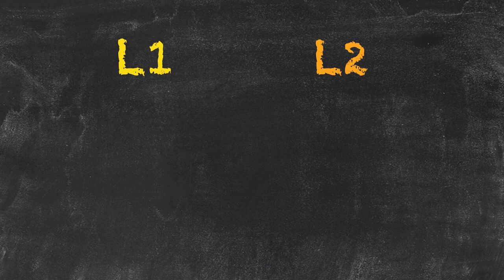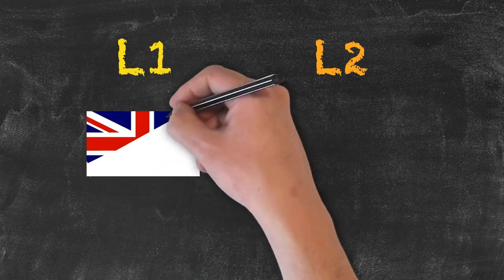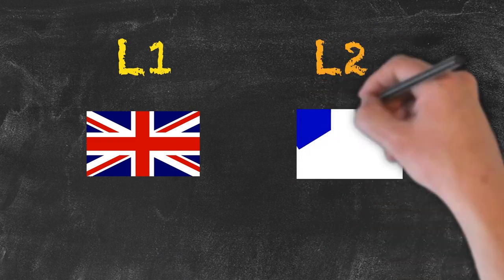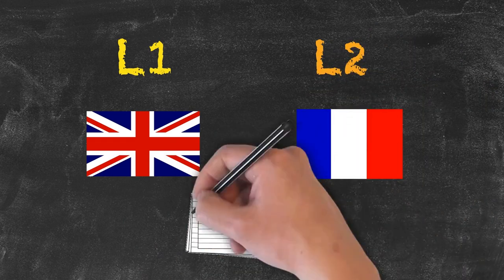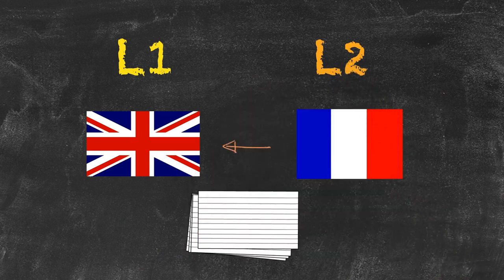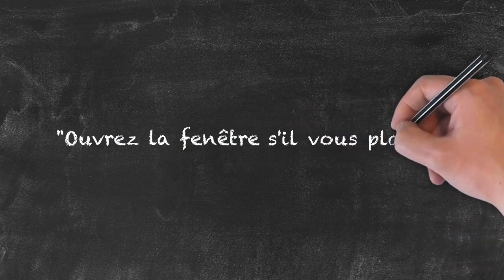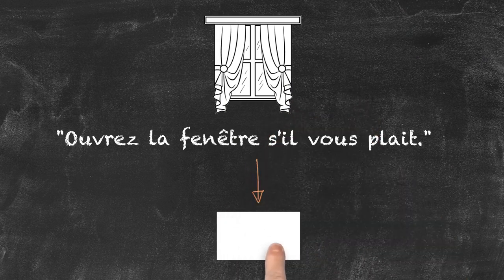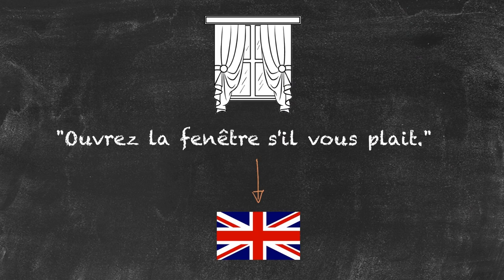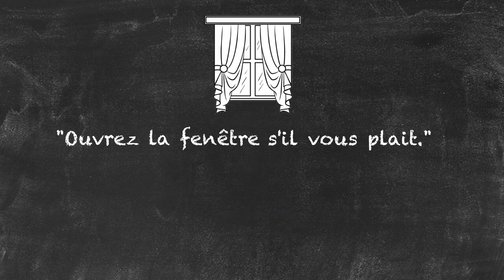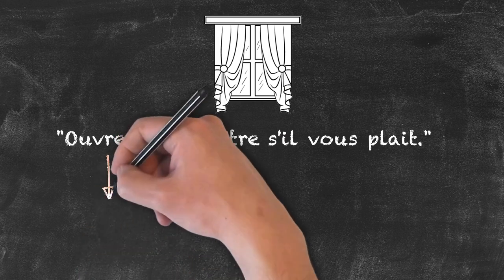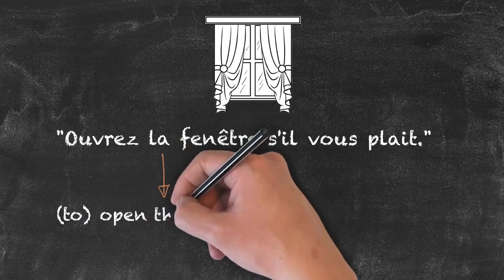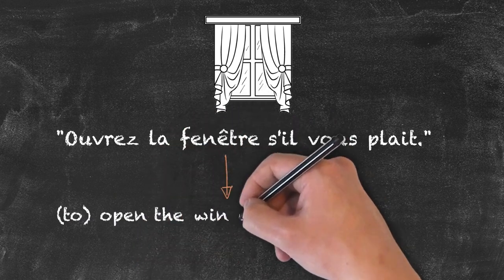Let's take a simple example. Imagine our native language is English and our target language is French, and we want to translate a French document into English. Here's a sentence in French: 'Ouvre la fenêtre, s'il vous plaît.' We want to take this L2 and translate it back into English. If we have a reasonable knowledge of French, we may know that 'ouvre' means 'to open,' 'la' is the feminine form of 'the,' and 'fenêtre' means 'window.' So the translation is: 'Open the window, please.'